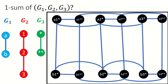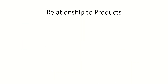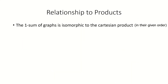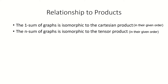I encourage you to pause the video now and find the rest of the edges yourself. Here they are — this is the result of the 1-sum of our graphs. Note that this is isomorphic to the Cartesian product of our input graphs. It turns out that the 1-sum of graphs will always produce a graph isomorphic to the Cartesian product of graphs. Interestingly, the n-sum of n graphs always produces a graph isomorphic to the tensor product of those graphs. I encourage you to think about why the 1-sum is the Cartesian product and the n-sum is the tensor product on your own.